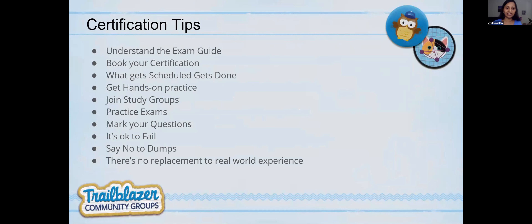Here are my top certification tips. Before thinking about taking a certification, I would review the exam guide — find out what topics are covered and evaluate where I stand. How much time would I need to prepare? Where are the gaps? I'd identify the time needed for each topic, roughly come up with a date, and then the most important thing: go ahead and book the certification. Whatever gets scheduled is the one that gets done. Once it's scheduled, we feel motivated and accountable and try to set aside time and get rid of excuses.